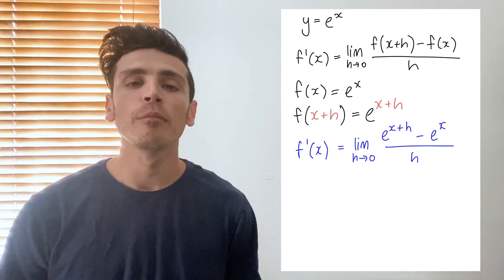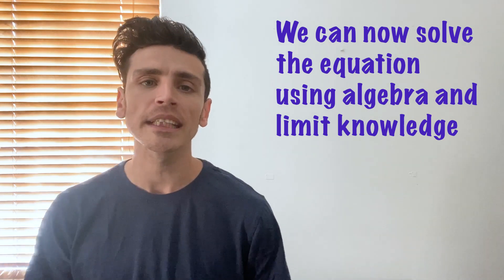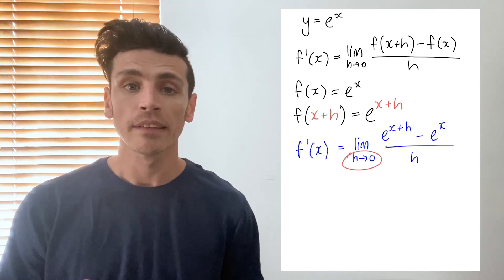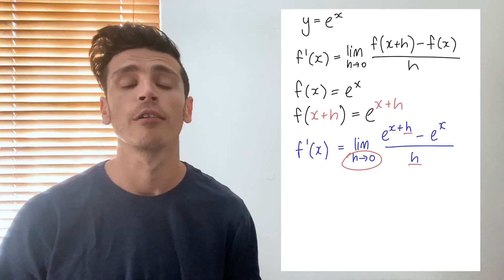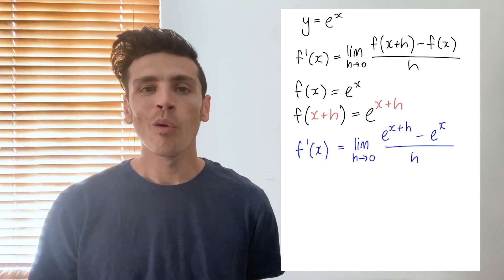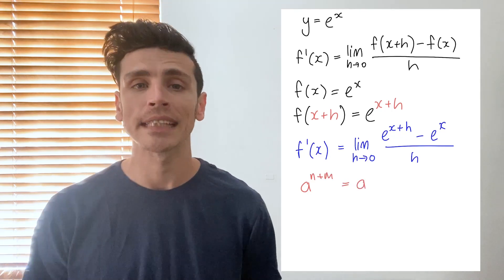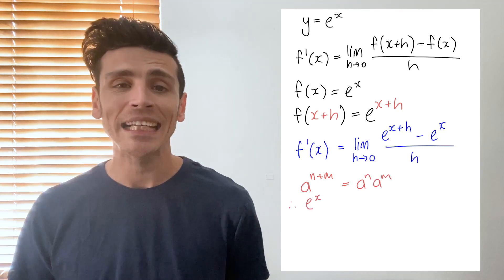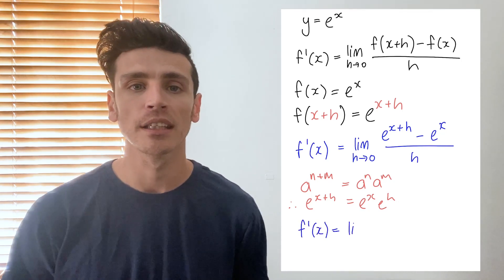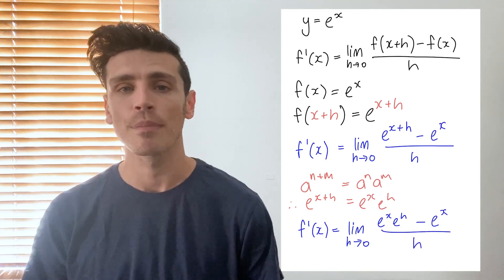Now we're going to use a little bit of algebra and limit identities to solve the remainder of this function. We want to separate the x and h parts. Using our index laws, we know that when indices are adding together it means two powers with the same base are multiplying one another. So e to the power of x plus h really means e to the power of x multiplied by e to the power of h. I can rewrite the formula as the limit as h approaches 0 of e to the power of x multiplied by e to the power of h, minus e to the power of x, all divided by h.